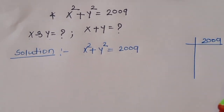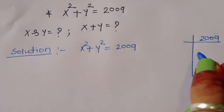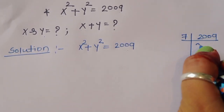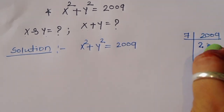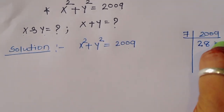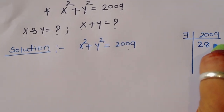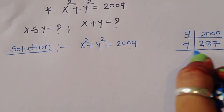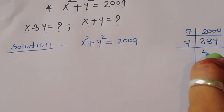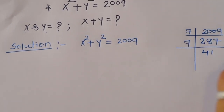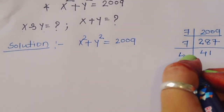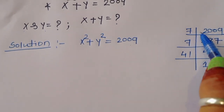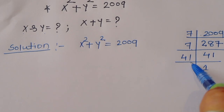Factoring 2009: dividing by 7 gives 287, dividing by 7 again gives 41. So the factor of 2009 is 7² × 41.